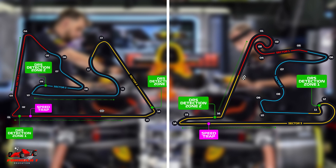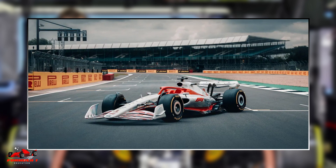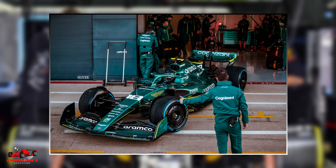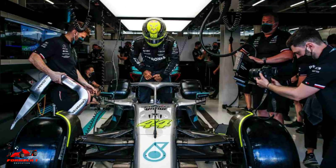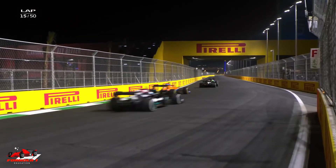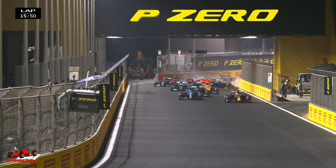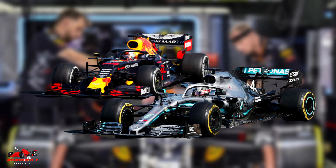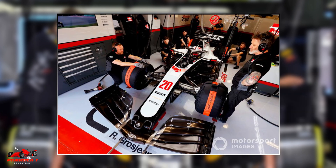There are many different circuits on the Formula One calendar, and the ideal car design for one track won't be perfect for another track. When Formula One teams talk about the setup, they're talking about the ability to fine-tune an F1 car, to make adjustments to it so that it gets maximum performance at all different circuits. While the fundamental design of the car can't be altered race-to-race, several parts of an F1 car can be adjusted to maximize performance.